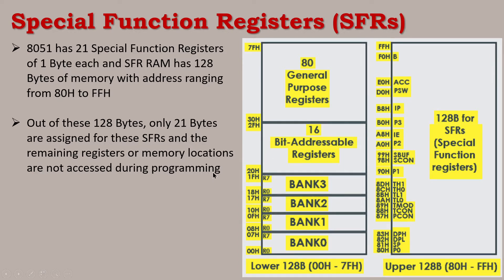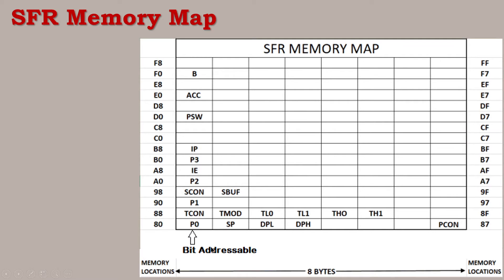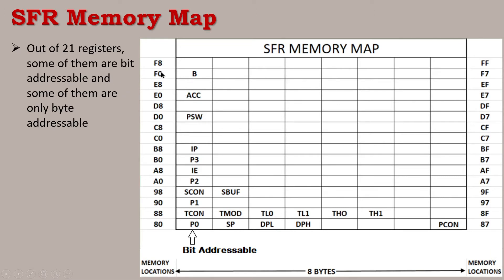Only 21 special function registers exist. Each uses 1 byte within the range. So the 80th byte, next is 81, 82, 83, up to the 87th byte, then 88, and double-F is the last byte. So these 21 bytes represent the 21 special function registers.